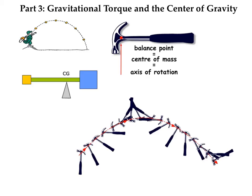We've discussed how to calculate the torque due to a single force. However, gravity does not act on a single point — it pulls downward on every particle that makes up an object. Each particle experiences a small torque due to gravity acting on it. We can add up all of those torques, and the result is a net torque that acts at a single point called the center of gravity.